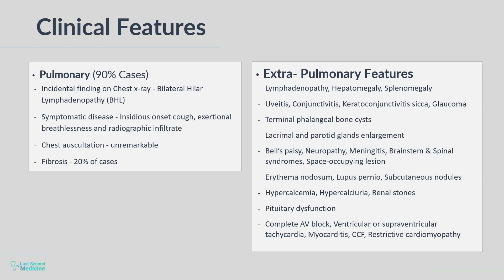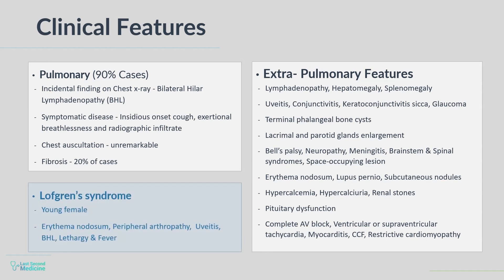Infiltrating granulomas in the heart may cause complete AV block, ventricular or supraventricular tachycardia, myocarditis, congestive cardiac failure, and restrictive cardiomyopathy. Sarcoidosis can also present with an acute illness, especially in young women, characterized by erythema nodosum, peripheral arthropathy, uveitis, bilateral hilar lymphadenopathy, lethargy, and occasionally fever. This constellation of symptoms and signs is called Lofgren's syndrome.